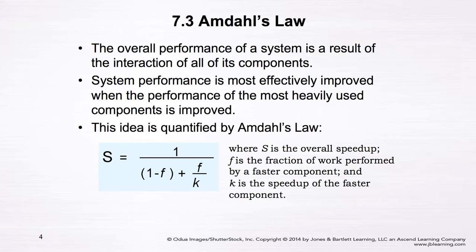Based on Amdahl's Law, system performance is most effectively improved when the performance of the most heavily used component is improved. The equation of Amdahl's Law is: the overall speedup S equals 1 over (1 minus f) plus (f divided by k), where f is the fraction of the work performed by the component you are replacing, and k is the speedup of the component you are replacing.